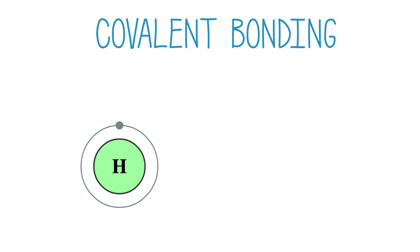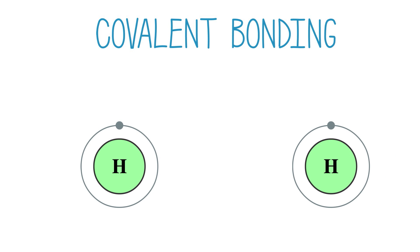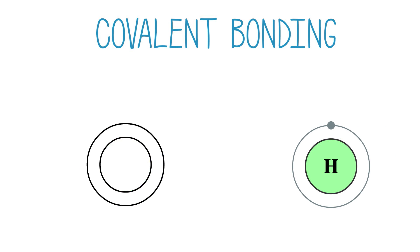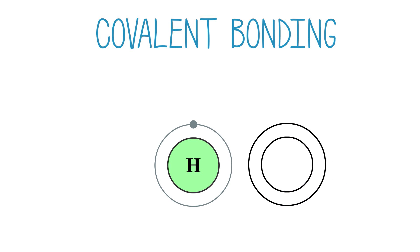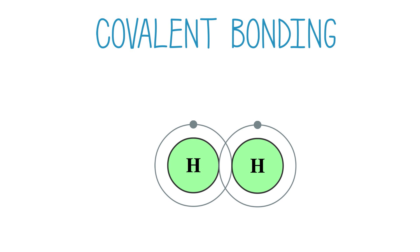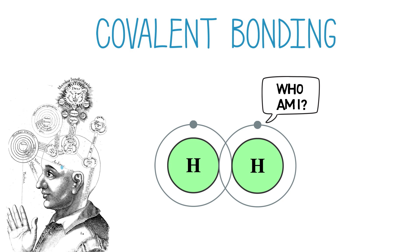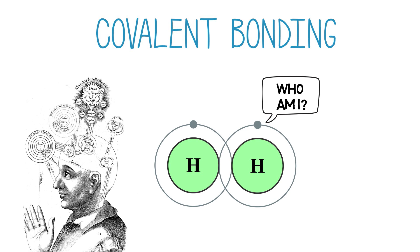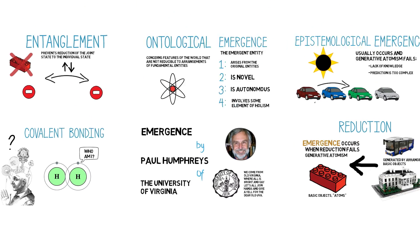A second example is covalent bonding in chemistry. If two hydrogen atoms — each of which consists of a proton and one orbiting electron — are covalently bonded into a hydrogen molecule, the electrons lose their individual identities and there is just one joint charge shared by the molecule. It is sometimes suggested that human consciousness is an example of ontological emergence, but I think that we do not understand consciousness sufficiently to make a considered judgment about whether it is in fact ontologically emergent.